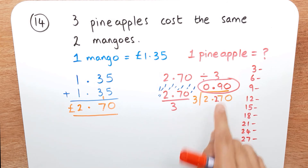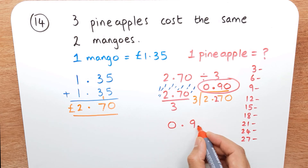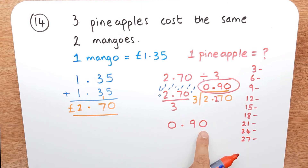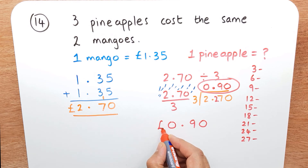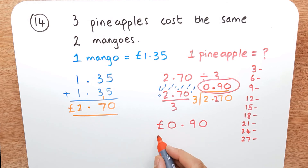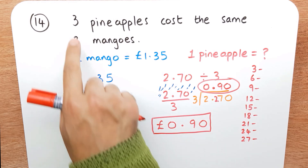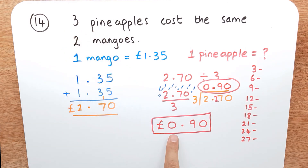The answer is £0.90. Because we're dealing with money we use two decimal places, so we keep that zero. Each pineapple costs £0.90, which is the same as 90 pence.